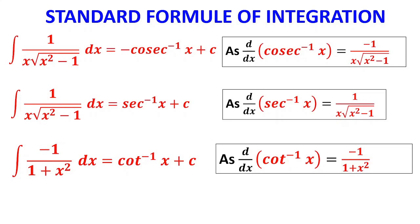Differentiation of cosec⁻¹x is −1/(x·√(x²−1)), therefore ∫1/(x·√(x²−1)) dx = −cosec⁻¹x + c. Differentiation of sec⁻¹x is 1/(x·√(x²−1)), therefore ∫1/(x·√(x²−1)) dx = sec⁻¹x + c. Differentiation of cot⁻¹x is −1/(1+x²), therefore ∫−1/(1+x²) dx = cot⁻¹x + c. Remember that ∫1/(1+x²) dx gives both tan⁻¹x and relates to cot⁻¹x, so you can use either formula when you encounter them.